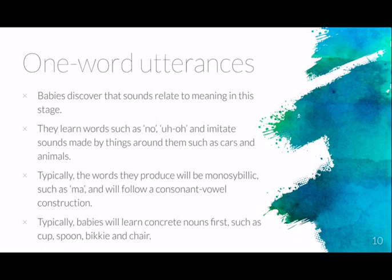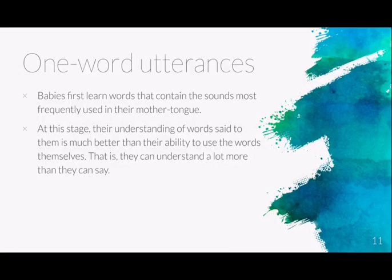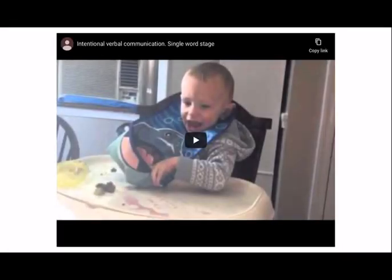Babies typically learn concrete nouns first — cup, spoon, chair — anything they can touch or see around them. It's much easier to process things they can see and touch than abstract concepts. Babies first learn words containing sounds most frequently used in their mother tongue. At this stage their understanding of words said to them is much better than their ability to use words themselves — they can understand a lot more than they're able to say.